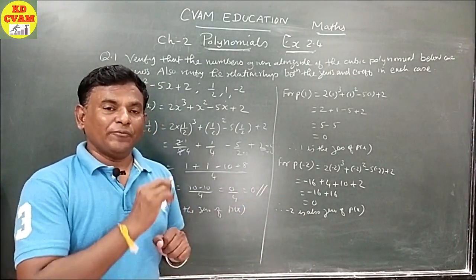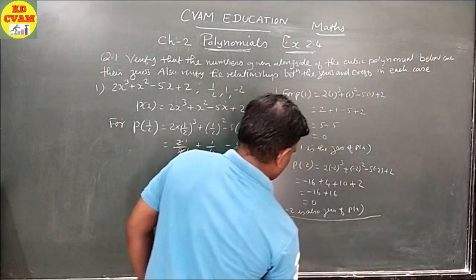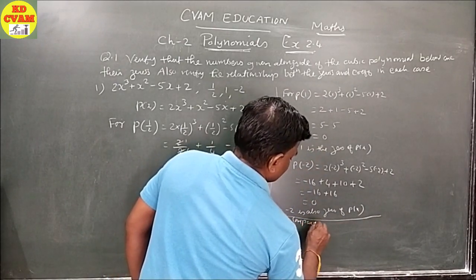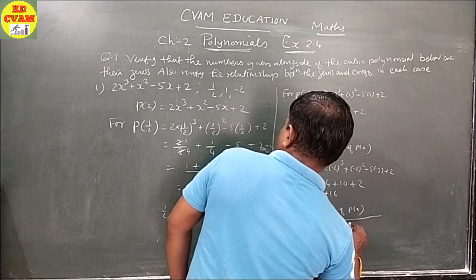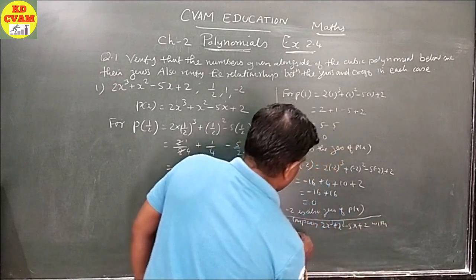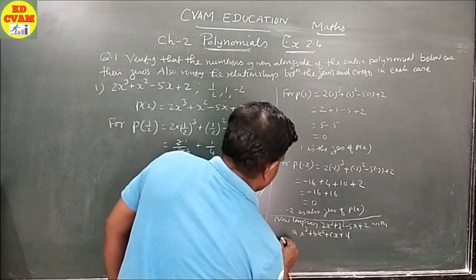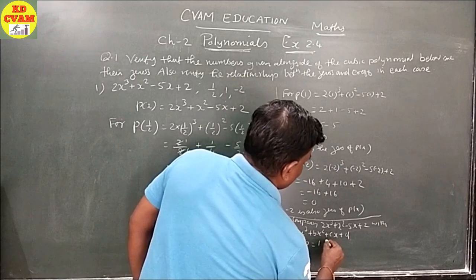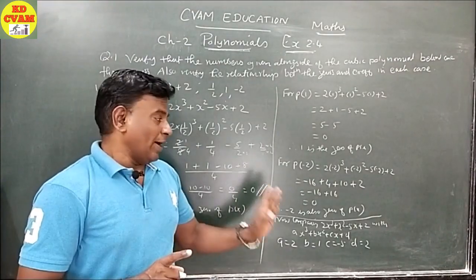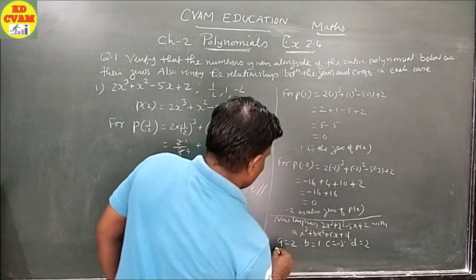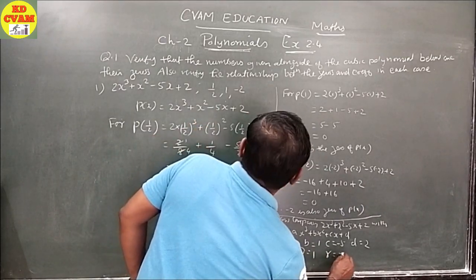Now we have proved all three zeros. We need to verify the relationship. Comparing 2x³ + x² - 5x + 2 with Ax³ + Bx² + Cx + D, we get: A = 2, B = 1, C = -5, D = 2. The given zeros are: alpha = 1/2, beta = 1, gamma = -2.